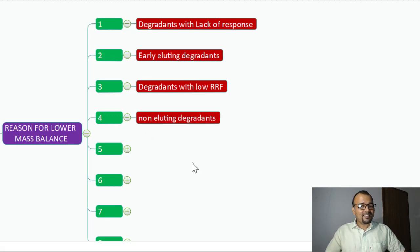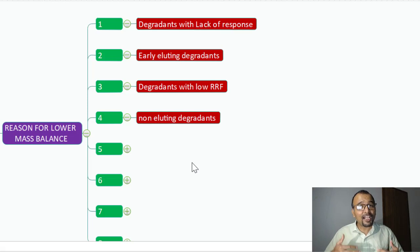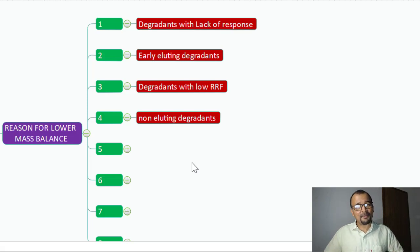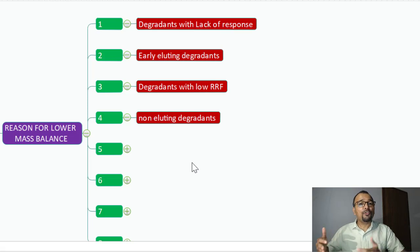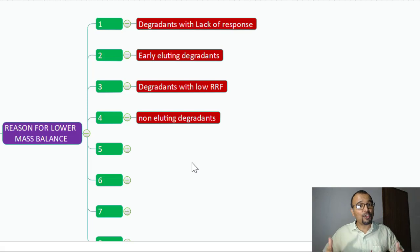Non-eluting degradants. If your degradants are highly non-polar and you are running reverse-phase chromatography, and if these degradants are not eluting out of the column because they have a very strong affinity toward the stationary phase, you will end up losing them during quantification and fall short of the mass balance.